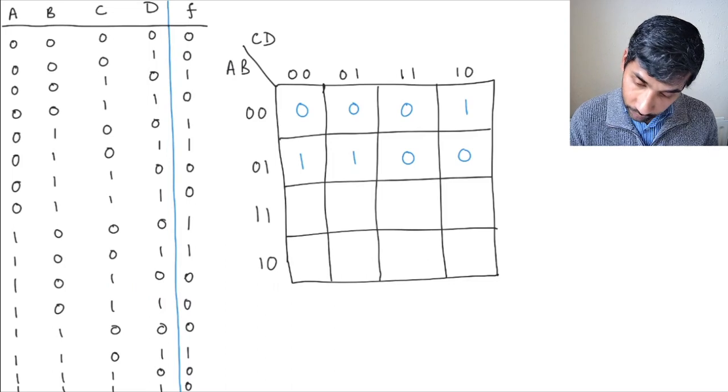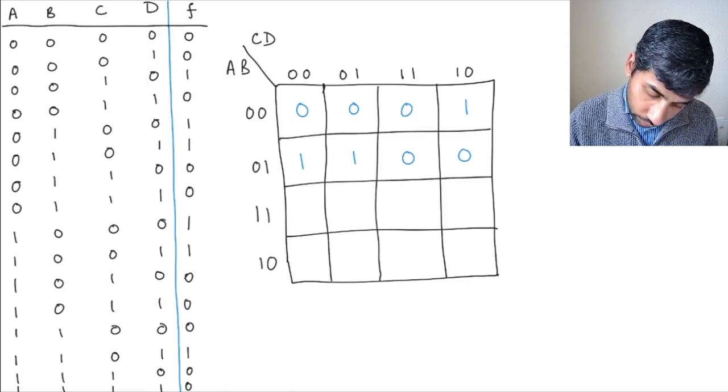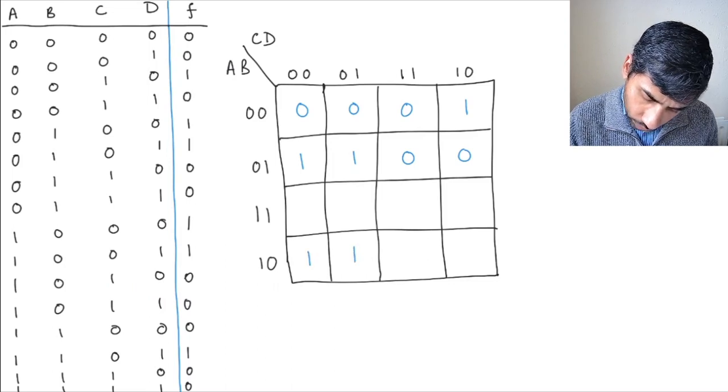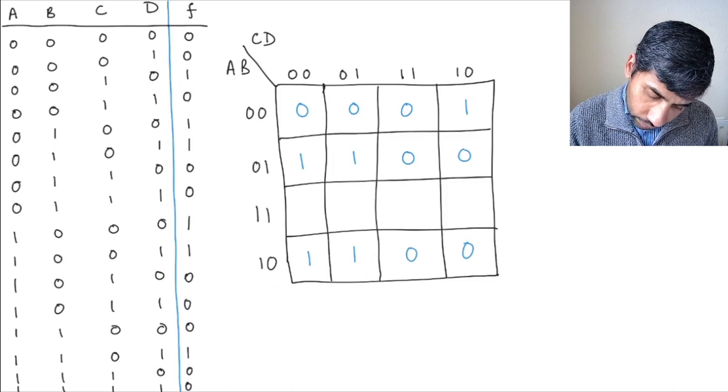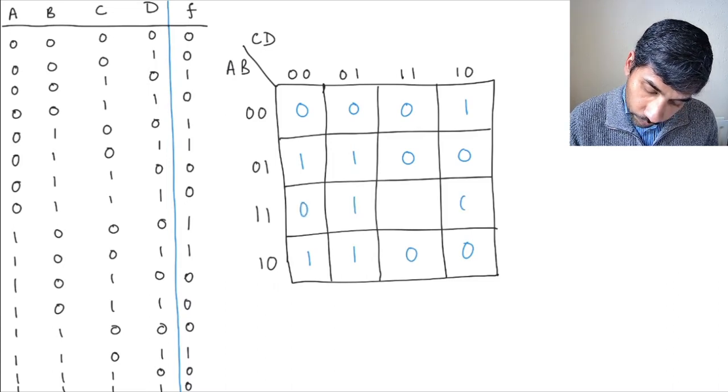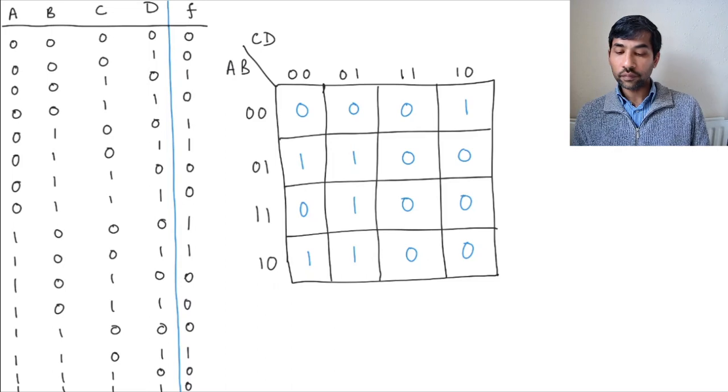So this goes at this point. So let's just write that. So you have 1, 1, 0, 0, and lastly, you have 0, 1, 0, 0.